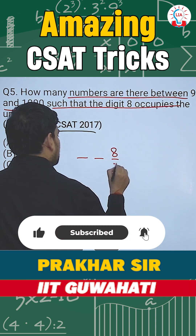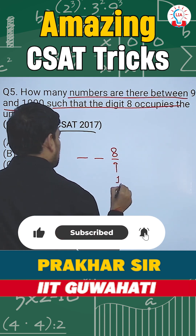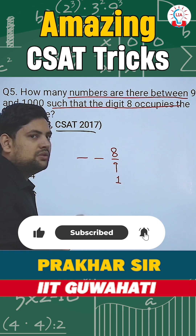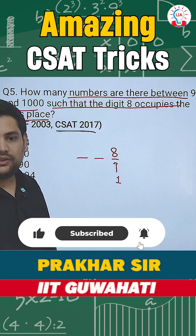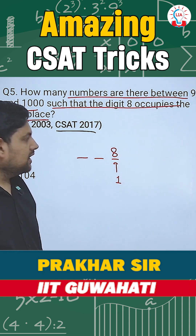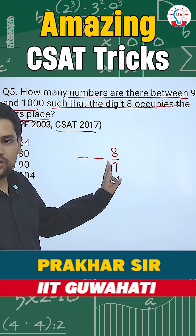So here I put 8 in the units place. How many ways to do this? Only one way — I put 8.